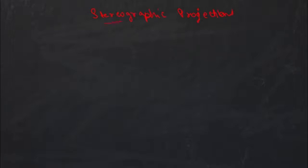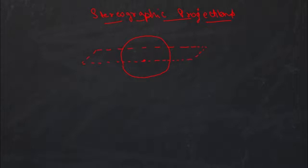I will not discuss stereographic projections in detail because it is not very useful at this stage, but I will explain just the basics. So suppose this is my complex plane — I'm drawing it as dotted just to express that it extends to infinity. And this is my unit sphere, and this complex plane is cutting the sphere at the equator, basically cutting it into two halves. This is the point (0, 0, 0) and this is (0, 0, 1).